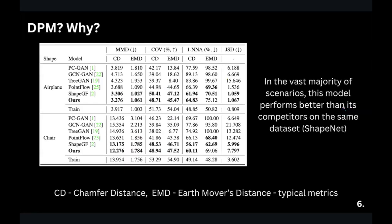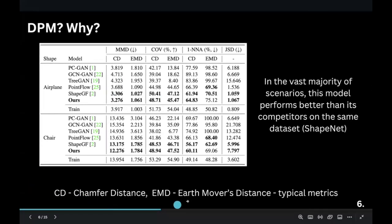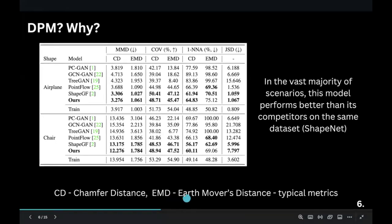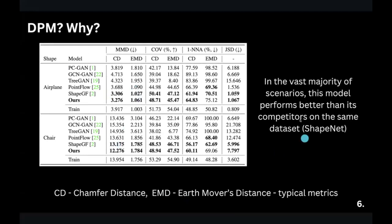Why DPM? In short, this type of model is currently showing excellent results in various generation sectors. For 3D generation, judging by standard metrics such as CD (Chamfer Distance) and EMD (Earth Mover's Distance), it is superior to competitors. CD is essentially a summation over all the distances between nearest neighbors, and EMD is more complex. All these results can be seen in the picture where the results corresponding to the DPM model are marked in bold.